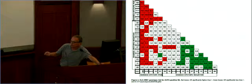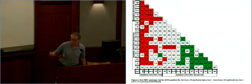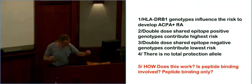So what this suggests is that the main thing still is the shared epitope. There is no obvious protection, and there is an obvious dose effect. Two doses, one dose, and zero dose. So that's actually a practical table we can use now in the clinic. So to summarize this genetic effect of HLA-DR beta-1. First, DR1 genotypes influence the risk to develop ACPA-positive RA. Two, double-dose shared epitope-positive genotypes contribute highest risk. Three, double-dose shared epitope-negative genotypes contribute lowest risk. Four, there is no total protection allele. Question, how does that work? Is peptide binding involved, and is it only peptide binding?